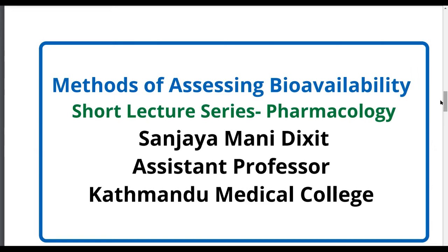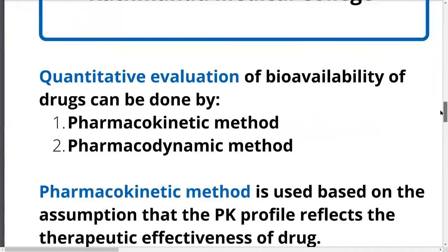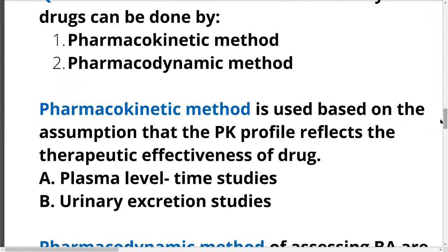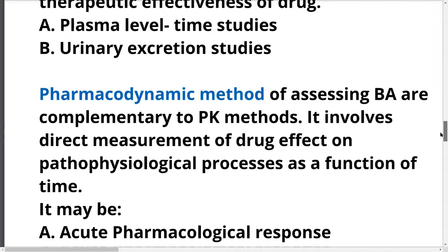The quantitative evaluation of bioavailability of drugs can be done either by the pharmacokinetic method or by the pharmacodynamic method. Mostly it is the pharmacokinetic method that is used. The pharmacokinetic method is based on the assumption that the pharmacokinetic profile reflects the therapeutic effectiveness of the drug. It is done using plasma level time studies and/or urinary excretion studies.